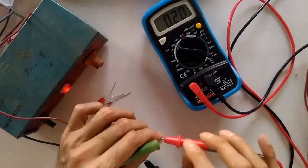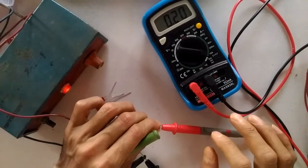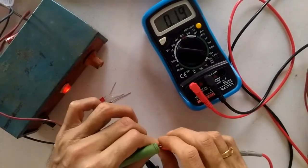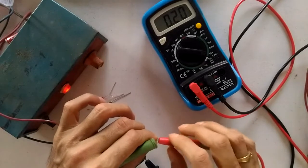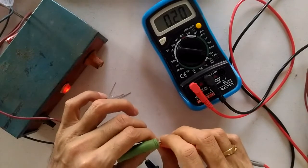So be careful while measuring current. Always start from the higher range unless you are very sure that the current is going to be lower. Then you can work on a lower range. Preferably always start on the higher range.